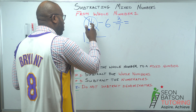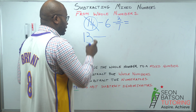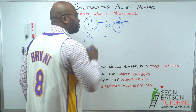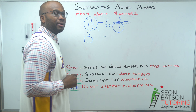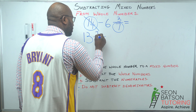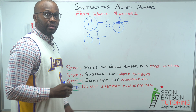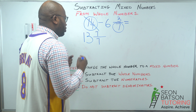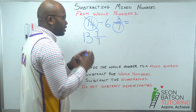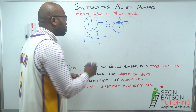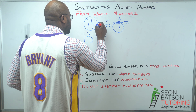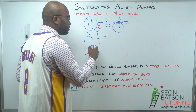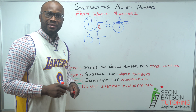Now we need the fractional part of the mixed number. That one we just borrowed will become the fractional part. We need a numerator and a denominator — this denominator here will help us. Since the denominator is seven, the fractional part becomes seven over seven. Seven over seven is a whole, because whenever the numerator and the denominator of a fraction are the same, that fraction equals a whole.